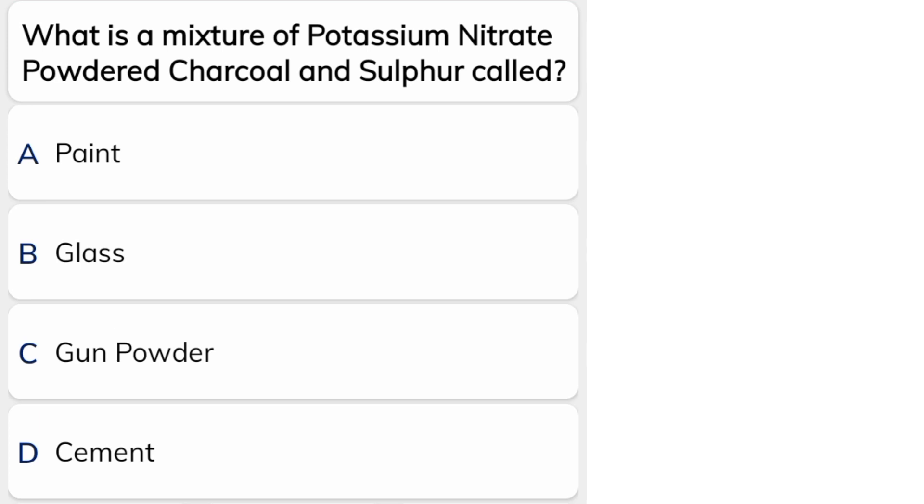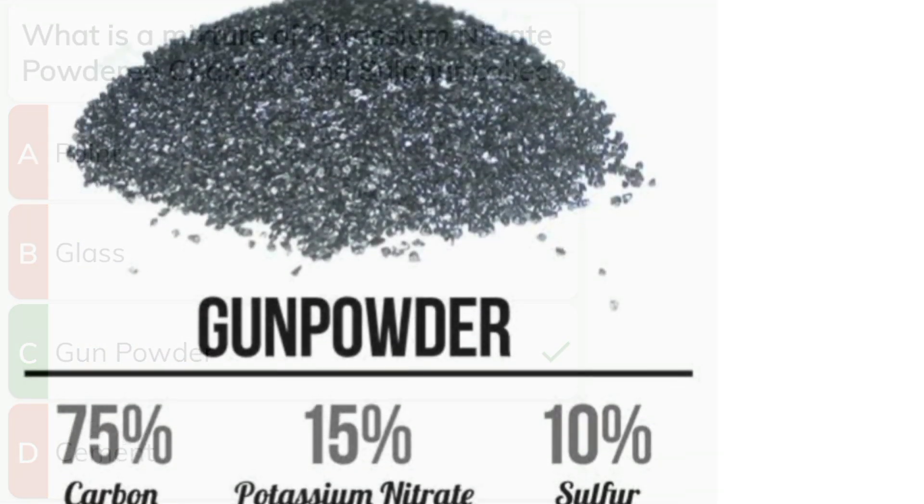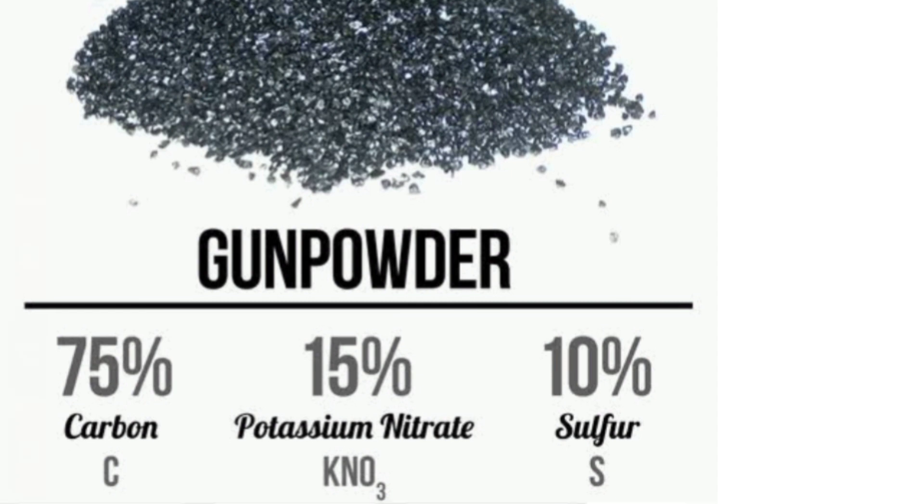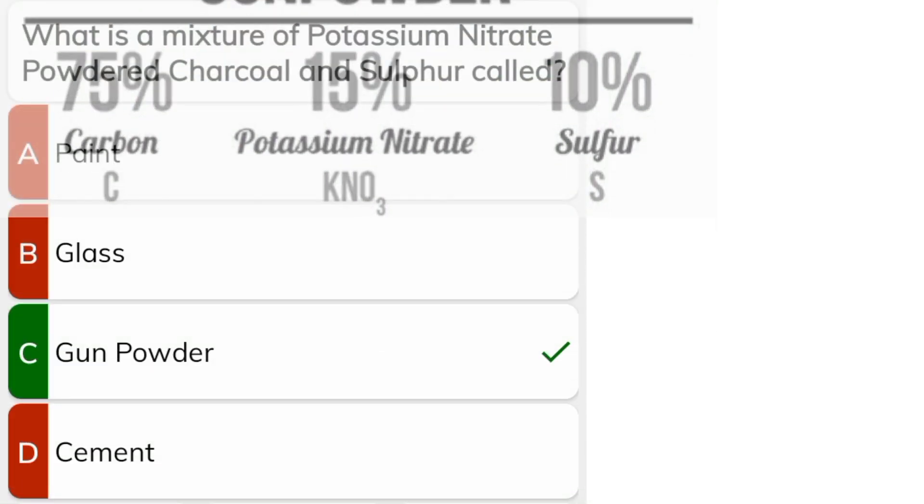What is a mixture of potassium nitrate powder, charcoal and sulfur called? C, gun powder. If we mix potassium nitrate, charcoal and sulfur, this mixture is called gun powder.